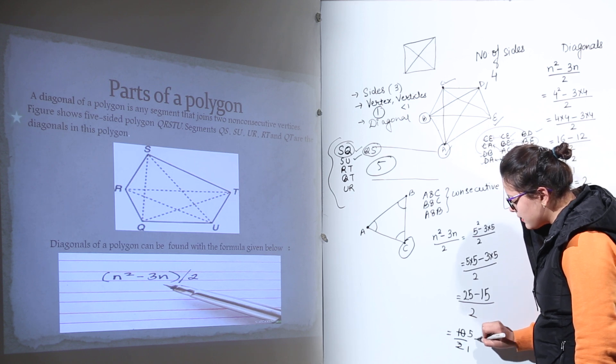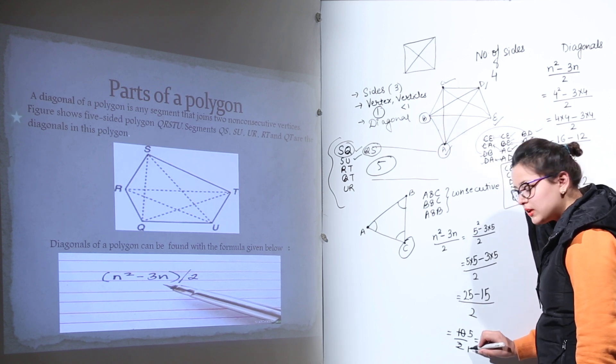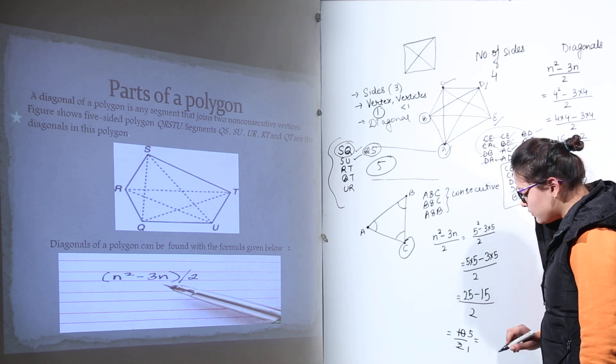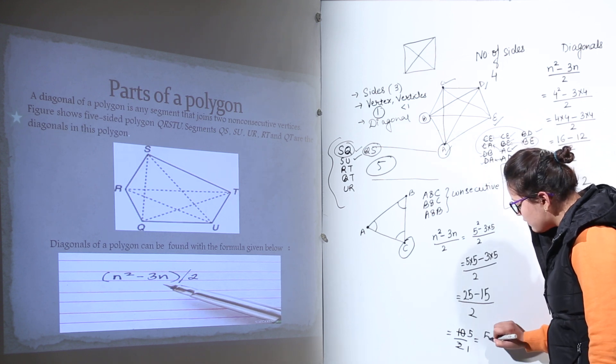2 ones are 2 and 2 fives are 10. You get 5 divided by 1. What will be the answer for this? It would be 5.